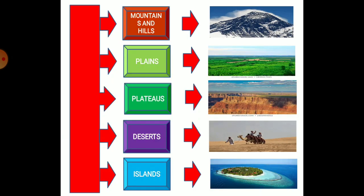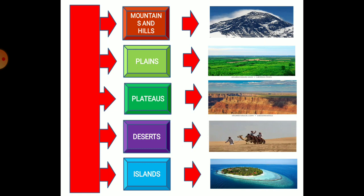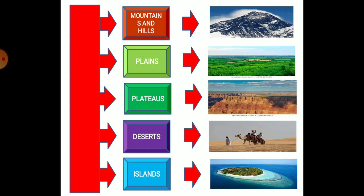Here you can see five kinds of landforms: mountains and hills, plains, plateaus, deserts, and islands.